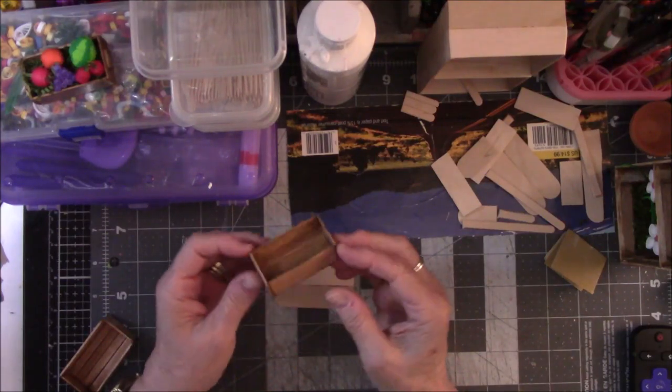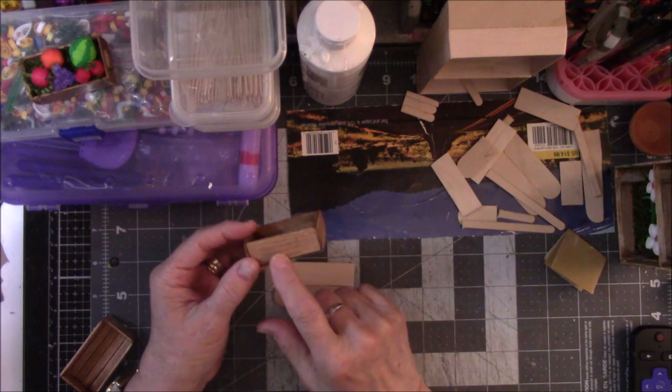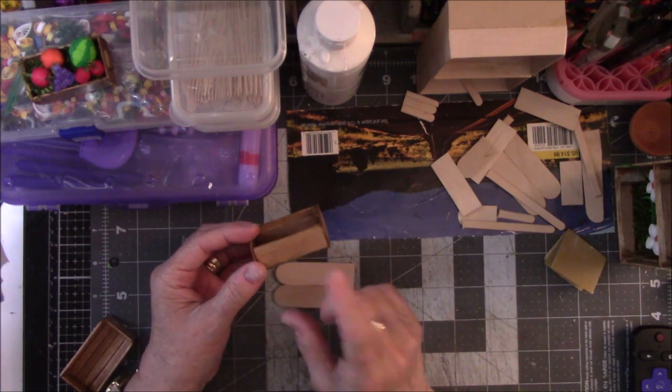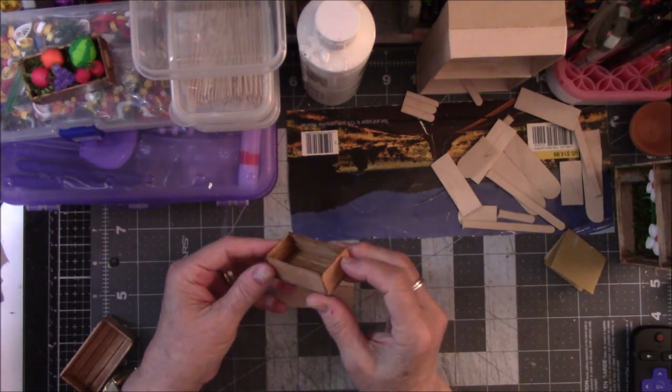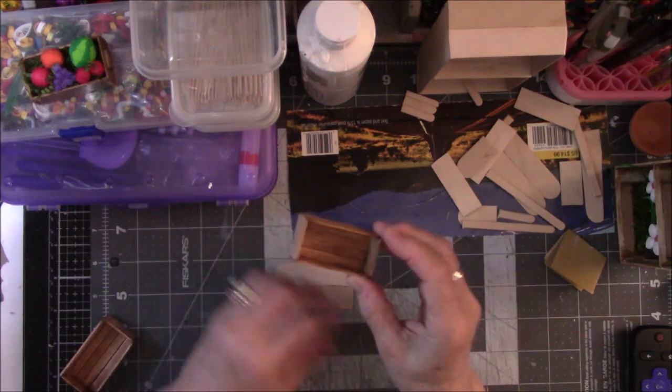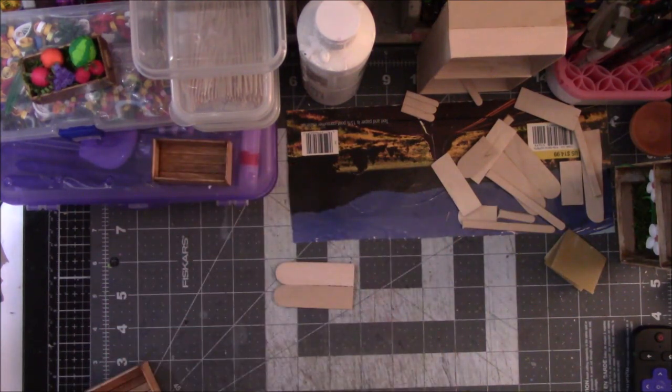And so that was the original formula for the crate. Then I used some stain that my husband had from building us a coffee table and I really liked the way it looks. So that was the original one.